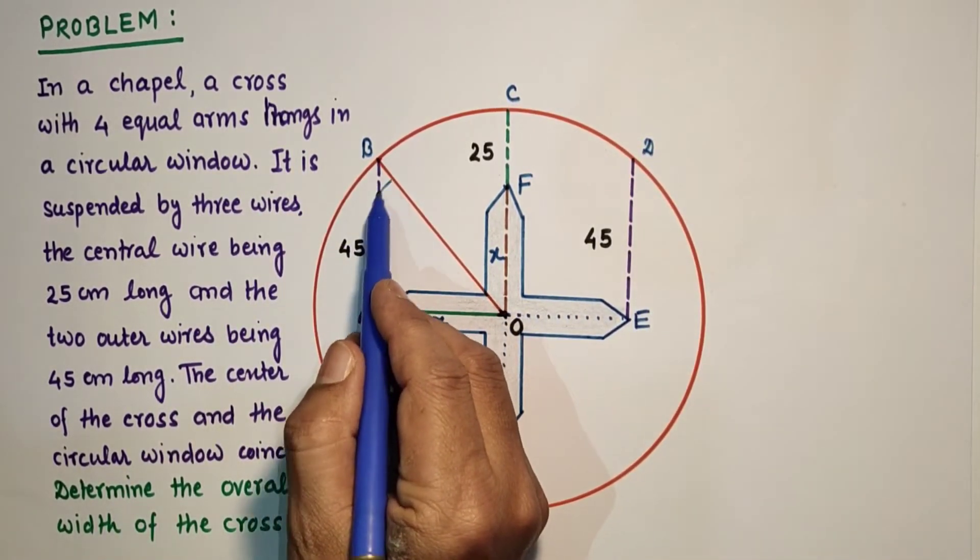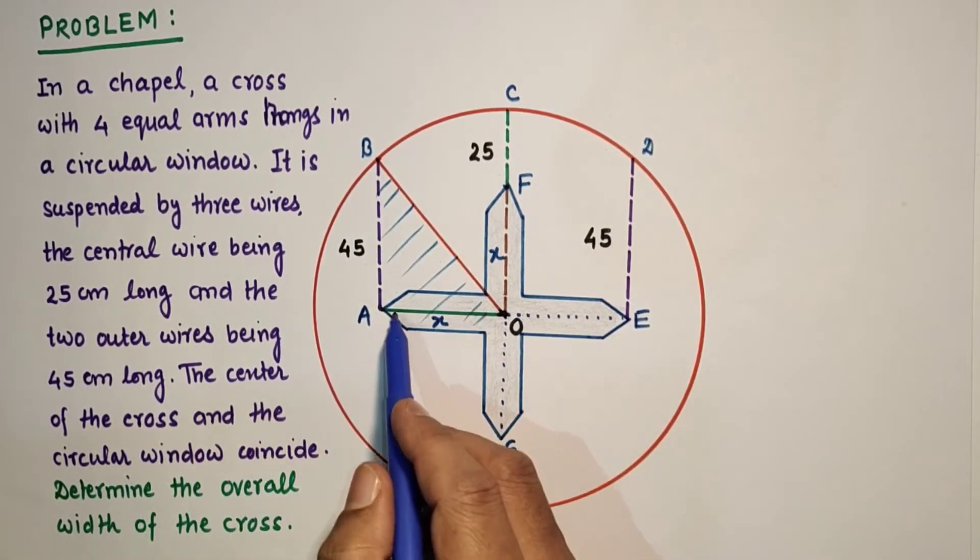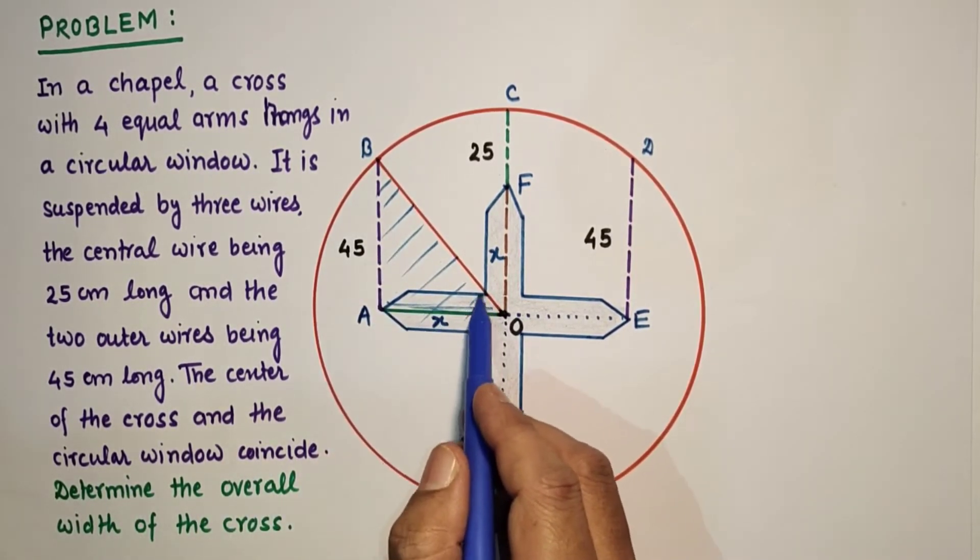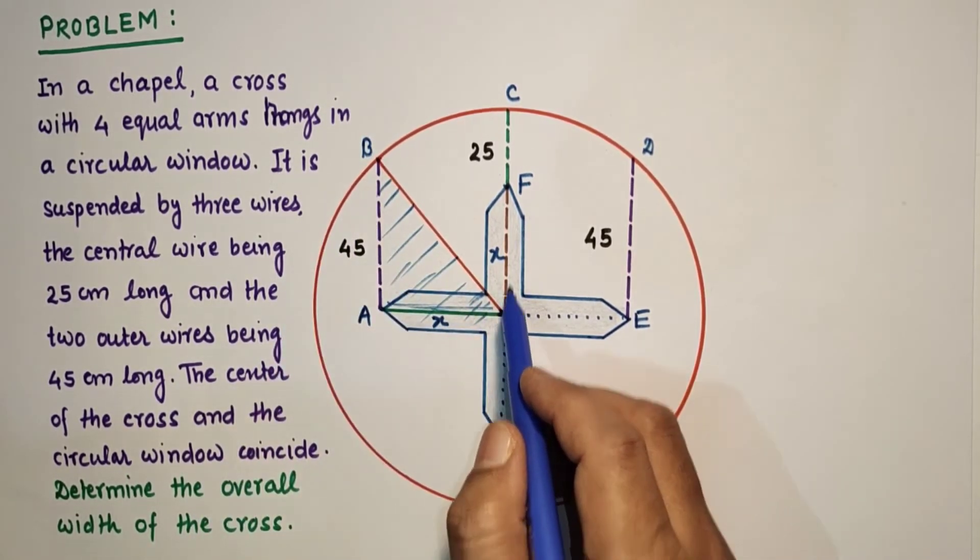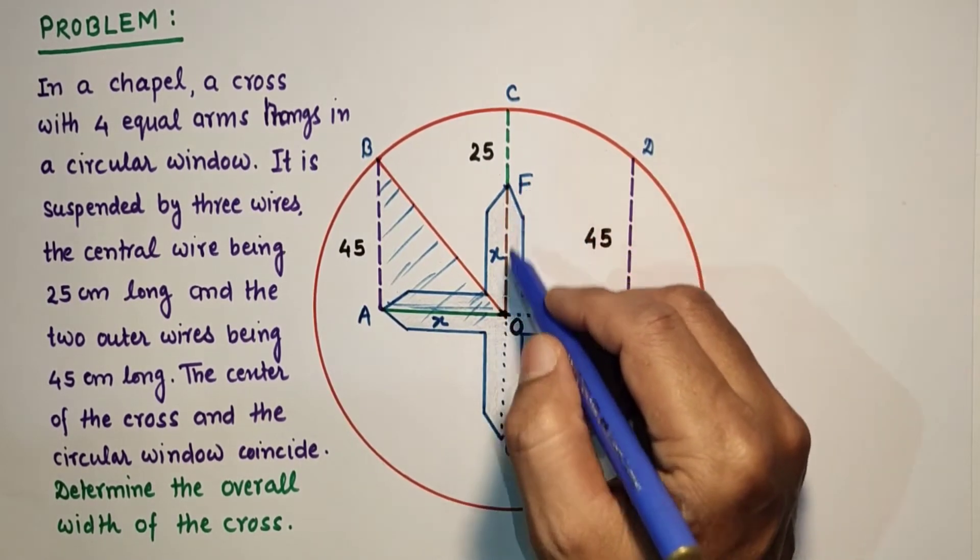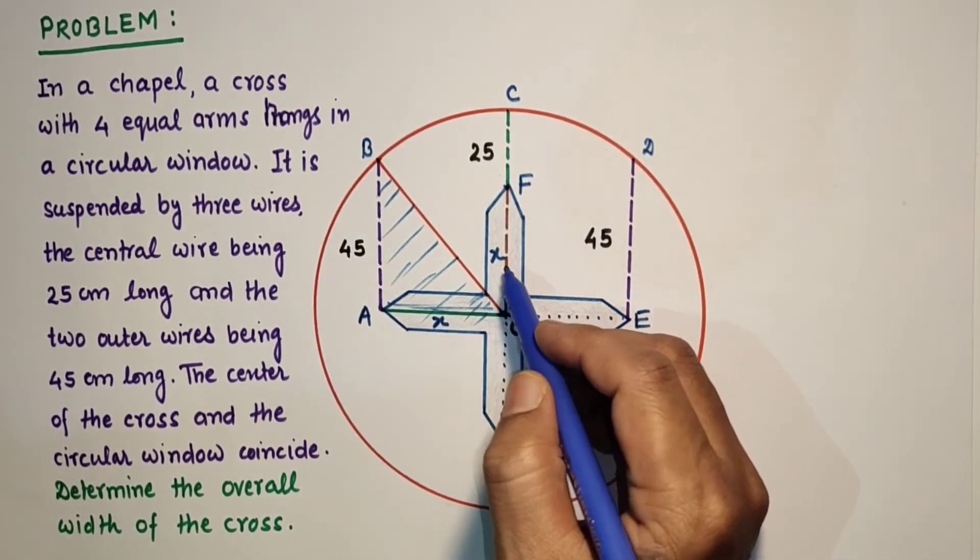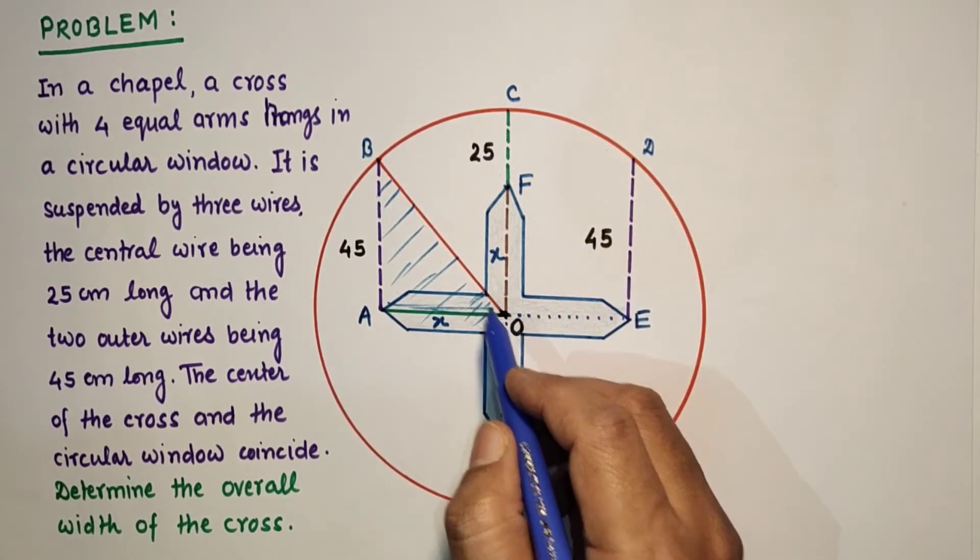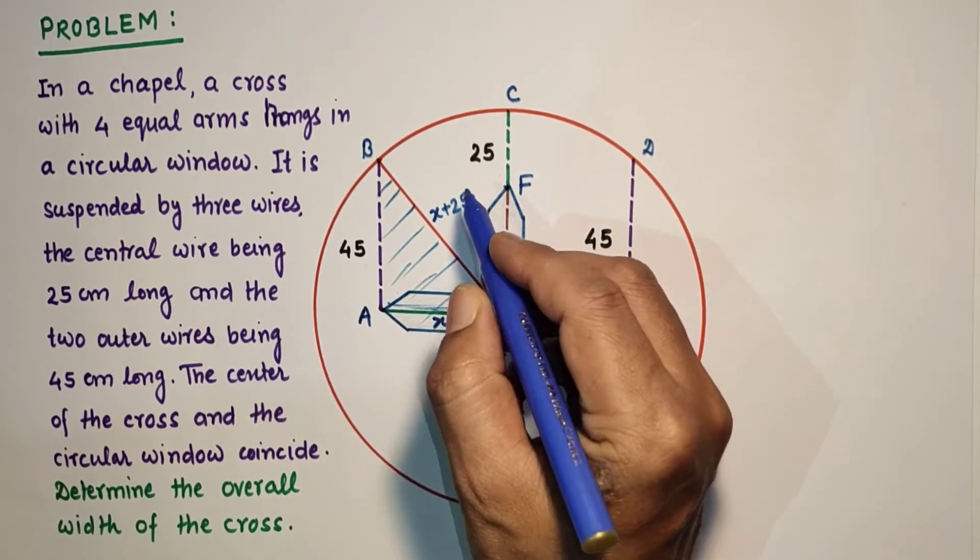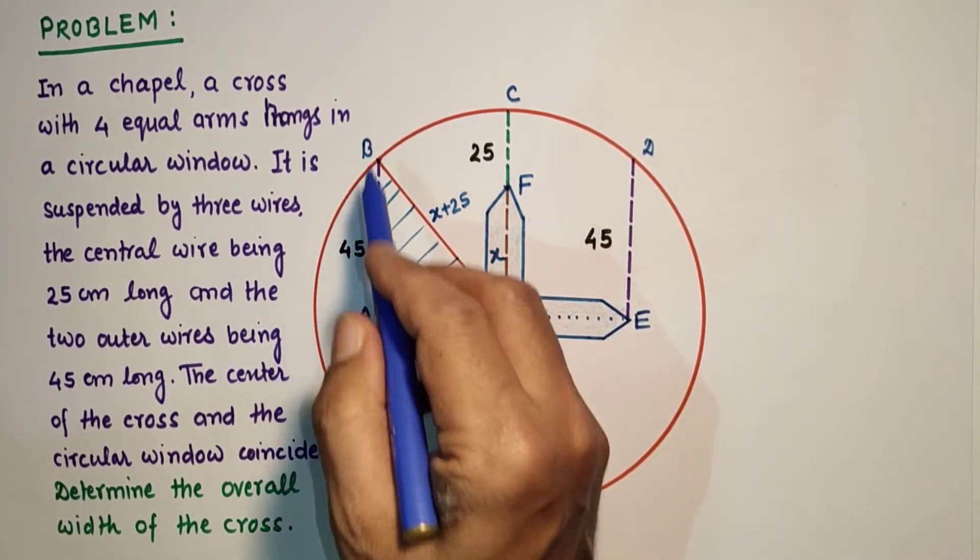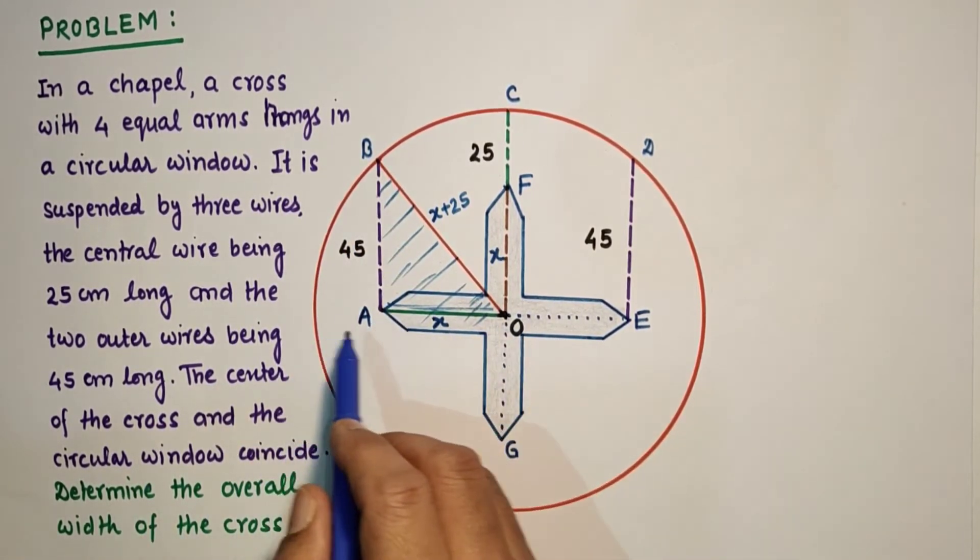So if we select this right angle triangle, this right angle from here to here. So this is X, and this is radius that is equal to OC. And OC is OF plus FC. OF we have assumed as X, so X plus 25. So we found OB as X plus 25. And this outer wire length is 45 cm, and this we have assumed X.